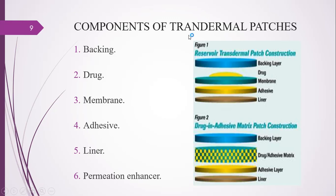Next we will see the components of transdermal patches. There are different components: backing, drug, membrane, adhesive, liner, and permeation enhancer. Looking at the diagram, you can see the backing layer, the drug, the membrane, the adhesive, and the liner. Other components of the transdermal drug delivery system include stabilizers, preservatives, and antioxidants or any other excipients depending upon the type of transdermal patch.